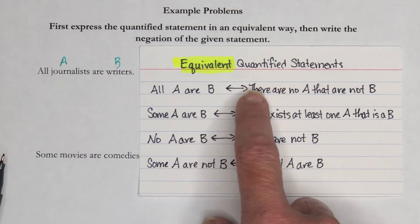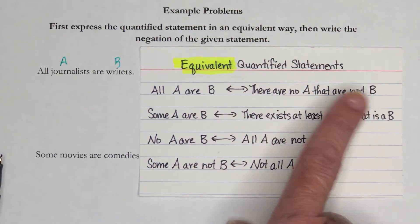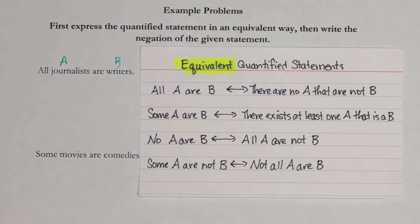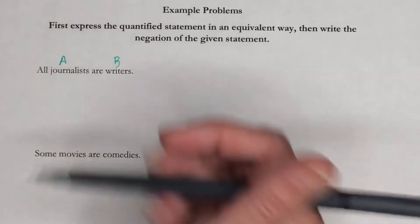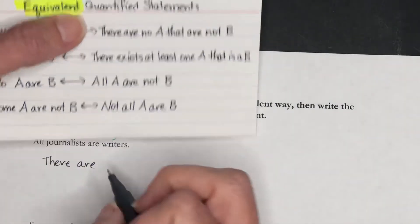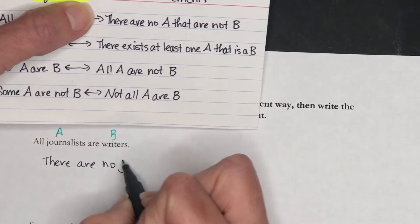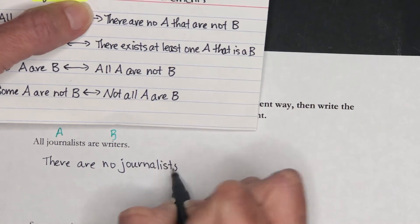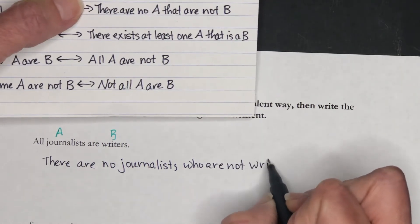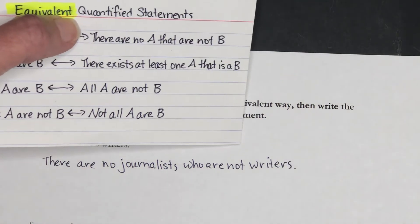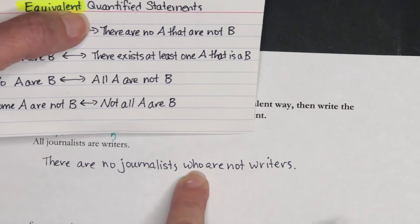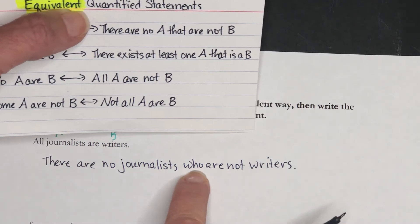An equivalent way of saying 'All A are B' would be: there are no A that are not B. So the equivalent statement is: there are no journalists who are not writers. I changed 'that' to 'who' simply because of grammar — you don't refer to people as 'that,' they are a 'who.' That's all.